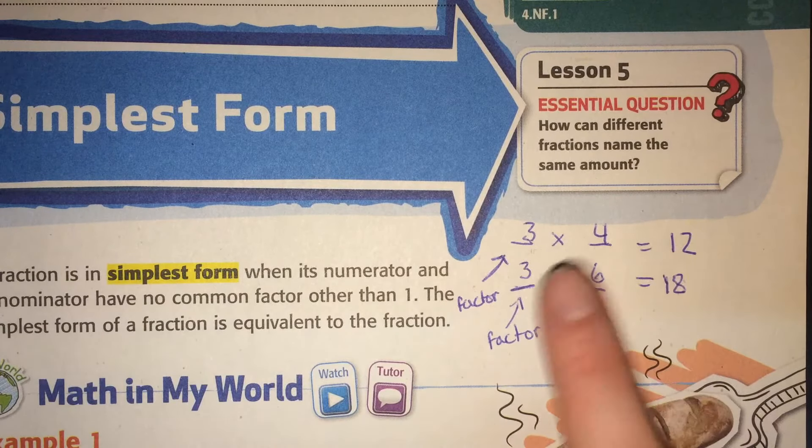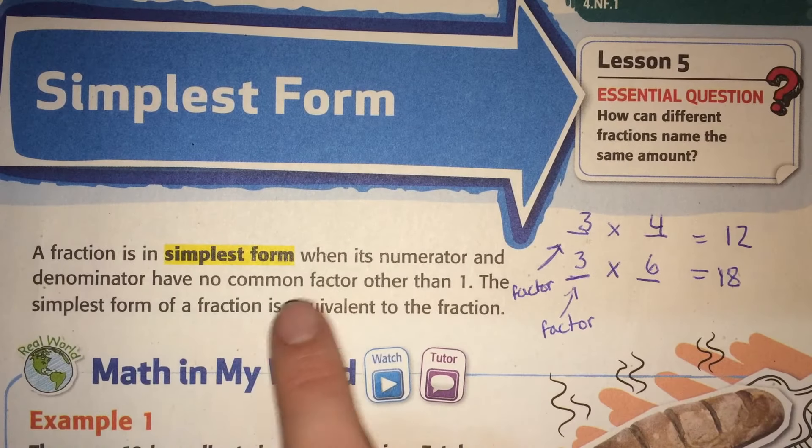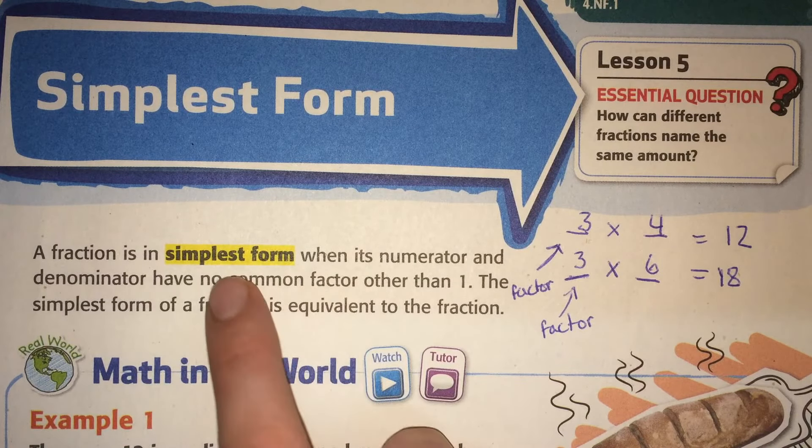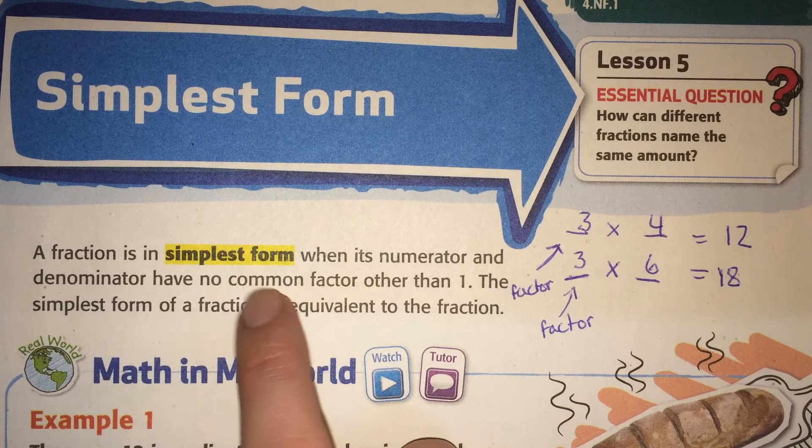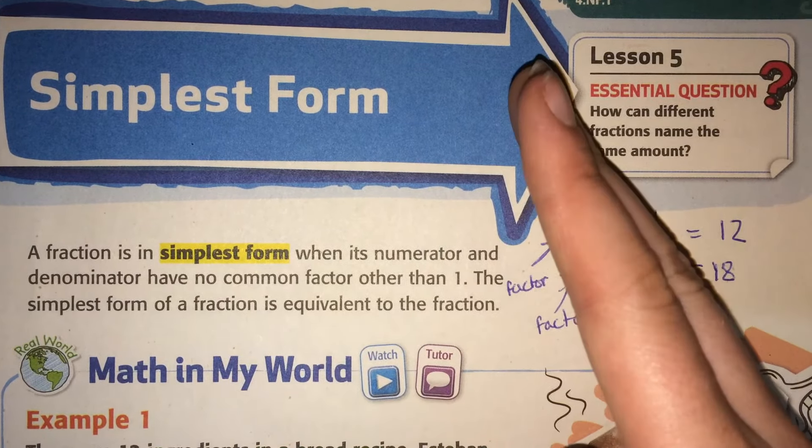So 3 times 4 equals 12, 3 times 6 equals 18. They both have 3. So that's what it means when it says common factor. So a number is in simplest form if they do not have a common factor. So this is not in simplest form.